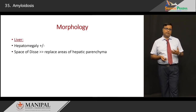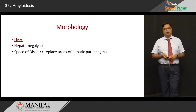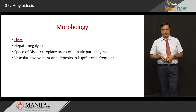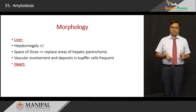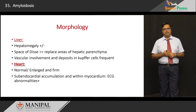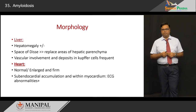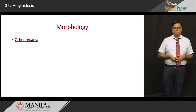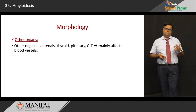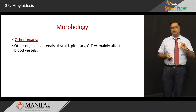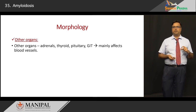In the liver, amyloidosis causes hepatomegaly, sometimes very massive enlargement. It is usually the space of Disse that is involved, encroaching upon the hepatic parenchyma and resulting in atrophy. Vascular involvement is also a feature. In the heart, it can appear normal, enlarged, or firm, with accumulation in sub-endocardial areas and sometimes in the myocardium, resulting in ECG abnormalities — often the only way to pick them up. In other organs such as adrenals, thyroid, and pituitary, the blood vessel walls are the key area to examine — unusually pink extracellular material in thickened vessel walls should raise suspicion for amyloid outside of arteriosclerosis.